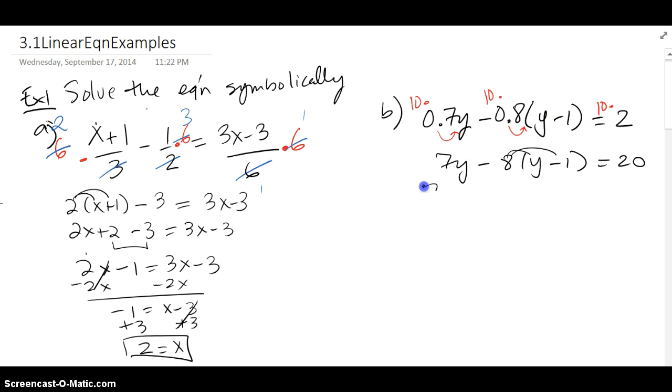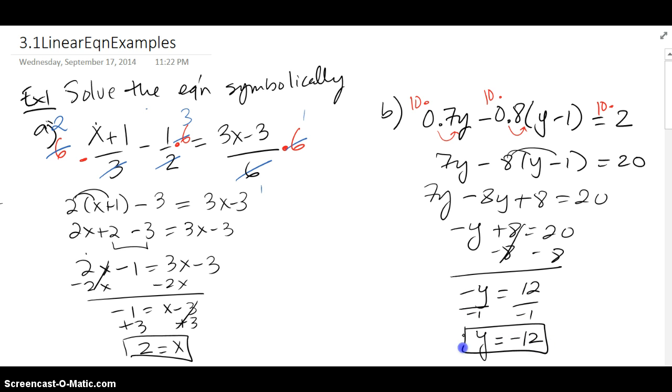Hereafter, we just simplify. So 7y minus 8y minus times minus 8 and negative 1 give us a positive 8, equals 20. 7y minus 8y is minus 1y. I'm going to subtract 8 from both sides. That's negative y equals 12. And then let's get a positive y. Divide both sides by negative 1. So it looks like y is going to be equal to negative 12.